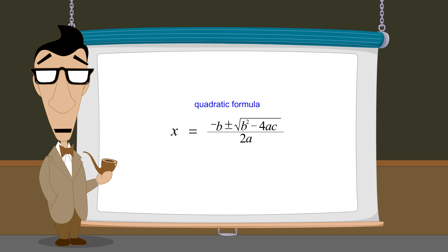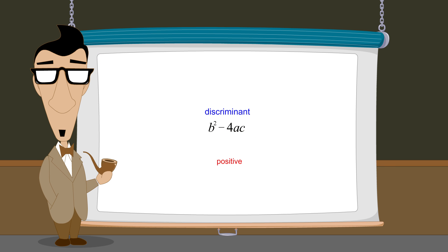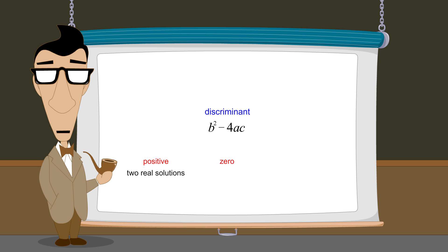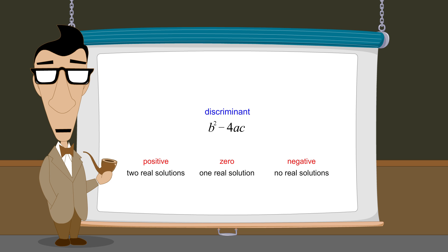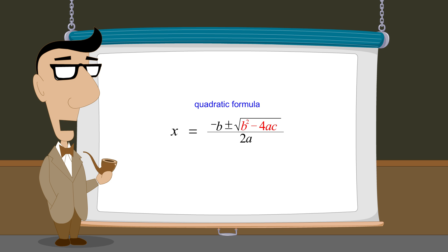We also saw that an expression within this formula, b-squared minus 4ac, called the discriminant, indicates the type of solutions the quadratic equation has. If the discriminant is positive, the quadratic equation has two distinct real solutions. If the discriminant is zero, the quadratic equation has one real solution, and if the discriminant is negative, the quadratic equation has no real solutions. This is because the quadratic formula includes the square root of the discriminant, and no real number can be the square root of a negative quantity.